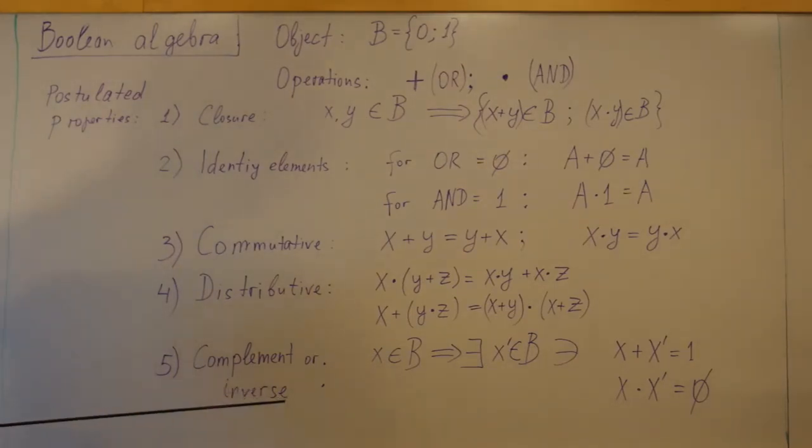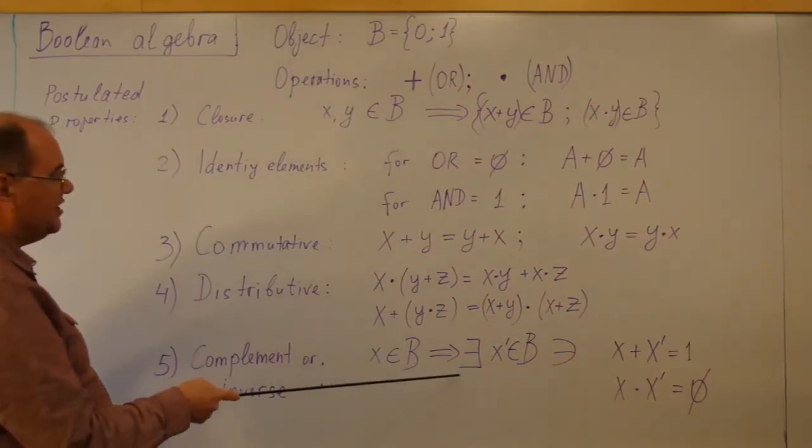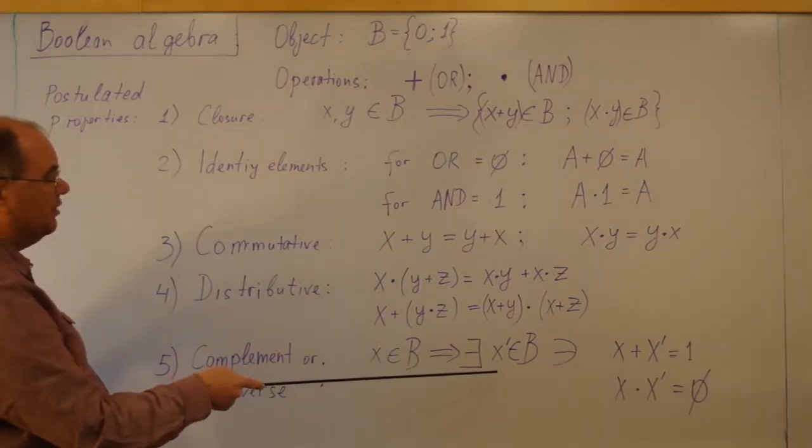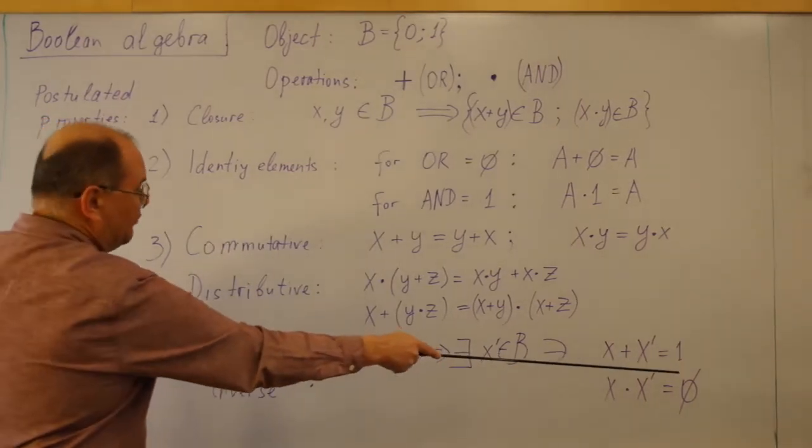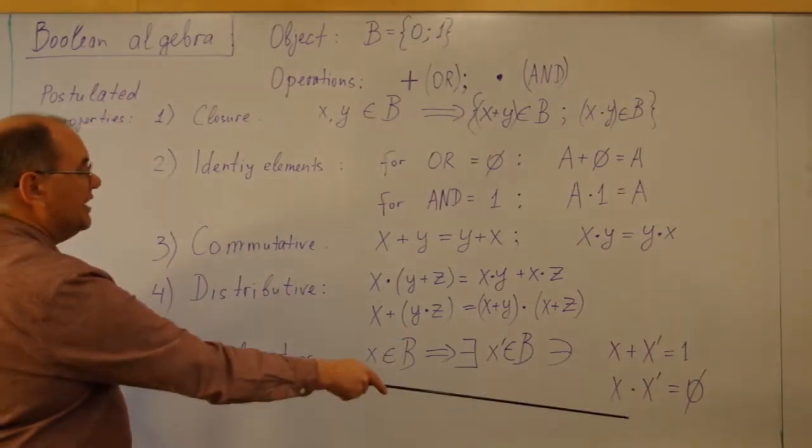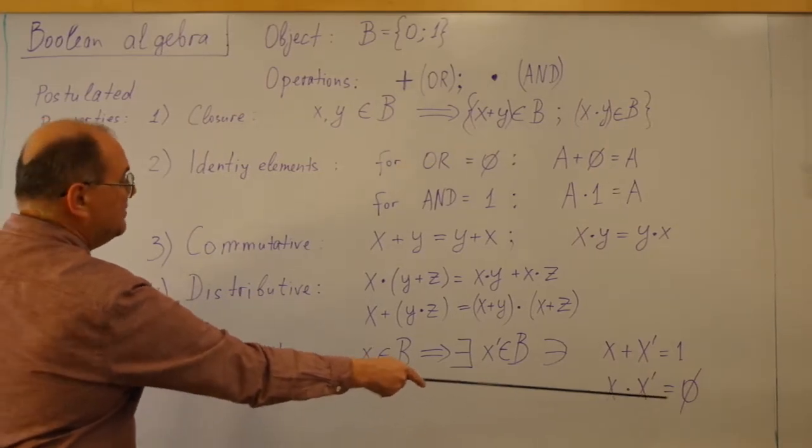Finally, complement or inverse. If element X is Boolean, then there exists element X prime also Boolean, such that X plus X prime will be equal to 1, and X times X prime equals 0.